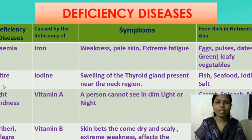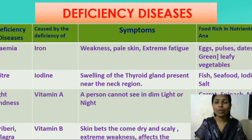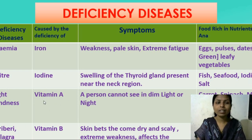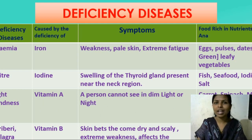The second one is Goiter. Goiter is caused due to the lacking of iodine. A symptom of goiter is swelling of the thyroid gland present near the neck region. Foods rich in iodine are fish, seafood, and iodized salt. The third one is Night Blindness. It is caused due to the lacking of Vitamin A. Night Blindness means a person cannot see in dim light or at night. Foods rich in Vitamin A include carrot, spinach, milk, papaya, eggs, and green leafy vegetables.